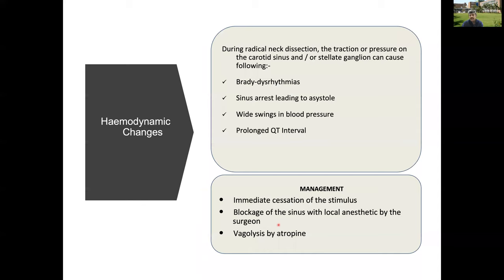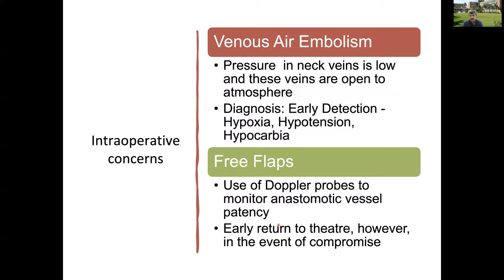During neck dissection, pressure on the carotid sinus or celiac ganglion may cause bradyarrhythmia, sinus arrest, wide swings in blood pressure, and prolonged QT interval. The best approach is to remove the stimulus — ask the surgeons to stop transiently. We may also give a local anesthetic at the site. Vagolysis using atropine is an alternative but should be the last resort, as the problem usually settles with cessation of stimulus or local anesthetic at the carotid sinus.